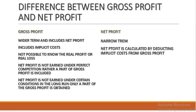What is the difference between gross profit and net profit? Gross profit is a wider term because it includes net profit, whereas net profit is a narrower concept. Gross profit equals total revenue minus explicit cost, and gross profit includes implicit cost. Net profit equals gross profit minus implicit cost. From gross profit alone, we cannot know the real profit or real loss. From net profit, since total cost includes both explicit and implicit costs, we can determine true profitability. Net profit is not earned under perfect competition, where the entrepreneur earns only normal profit, which is part of the cost of production. In the long run, only normal profit is obtained.